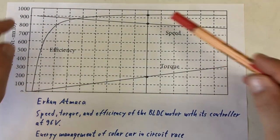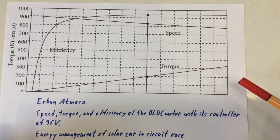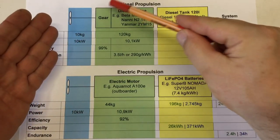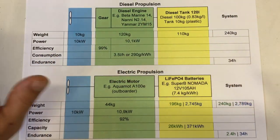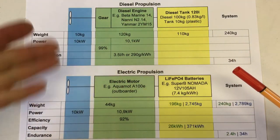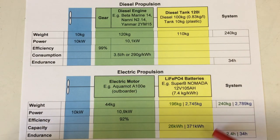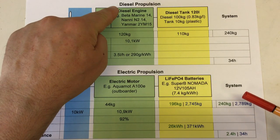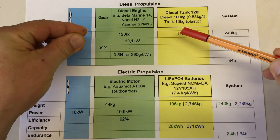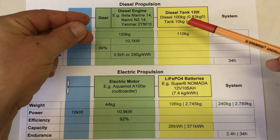I found that graph in a publication from Airconmycar. That's his speed torque and efficiency of the BLDC motor with its controller at 96 volts from his energy management of solar car article. That means for our diesel and electric propulsion systems, if we would be cruising along at a leisurely pace, drawing only half of the max power, 5 kilowatts with an electric motor, we would double our endurance. With our diesel engine, we would double the endurance and then get 10% on top of that.